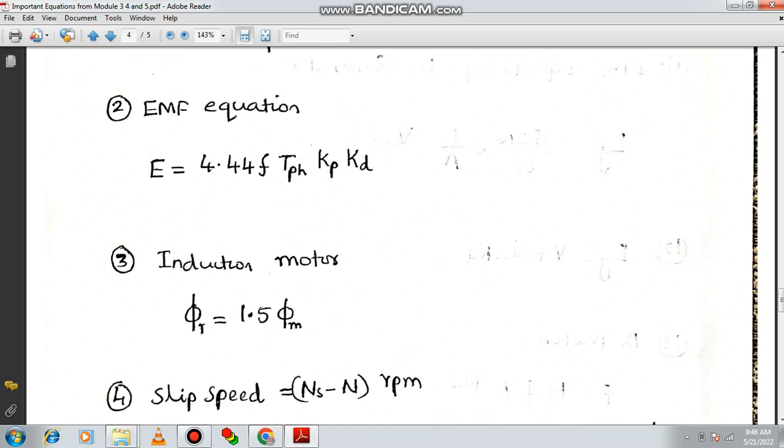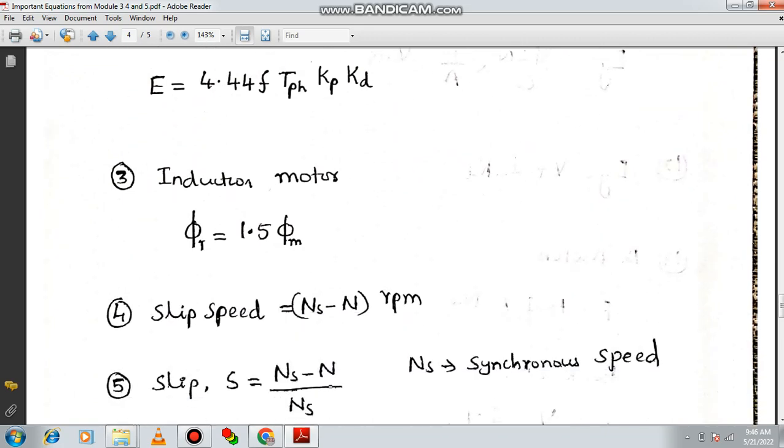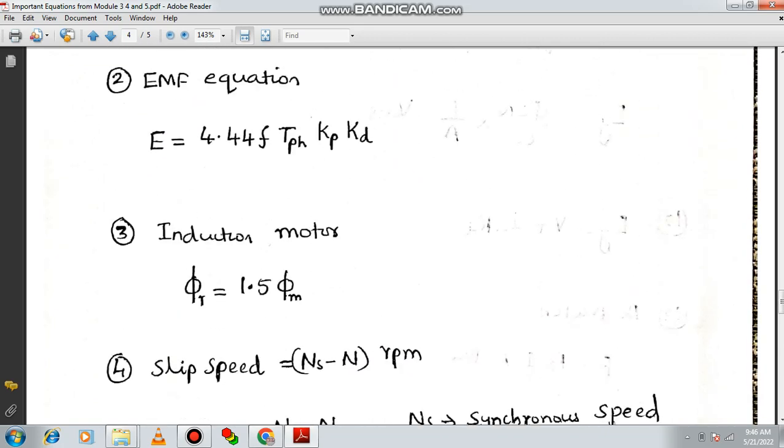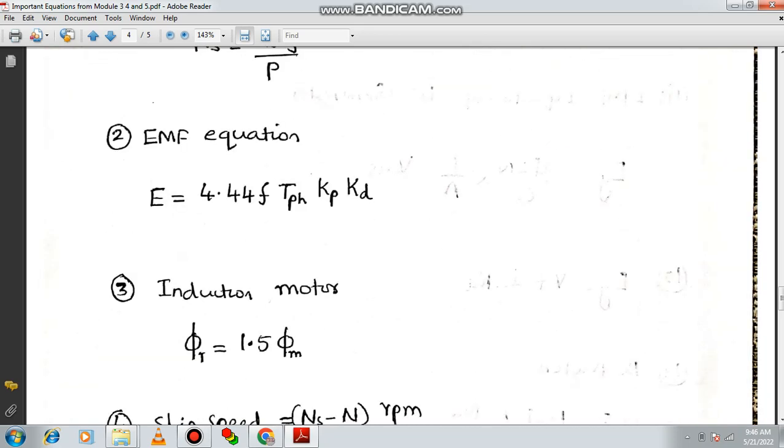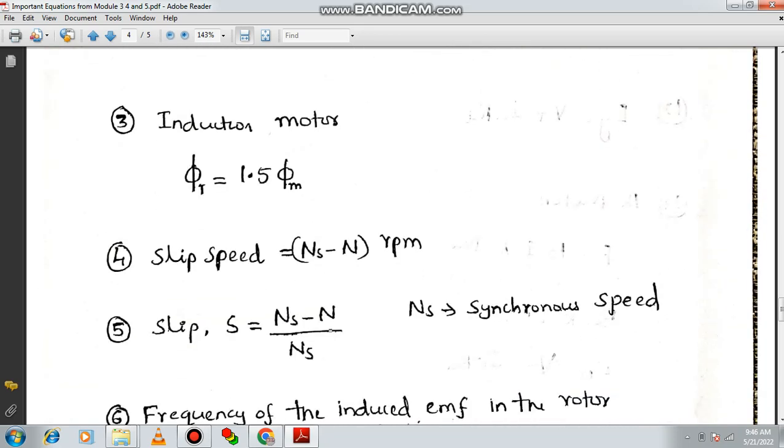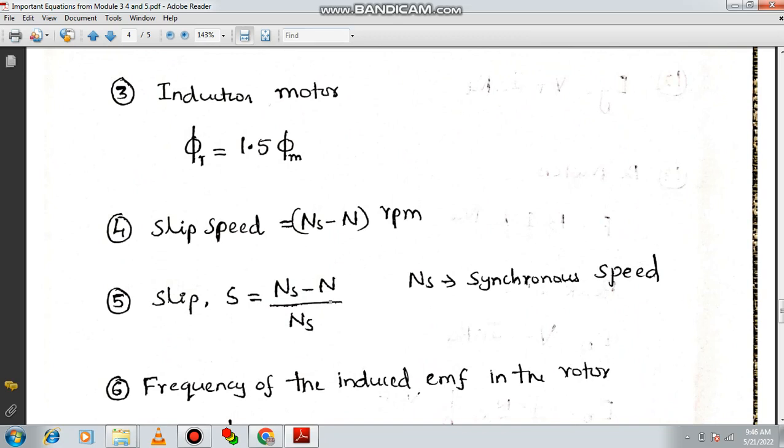In the previous session, I have explained about the alternator, important equations from alternator of module 4. But I need to have little bit of time for elaborating the induction motor. In case of induction motor, you must have studied about the rotating magnetic field. Here the resultant flux can be written as 1.5 times of maximum flux.